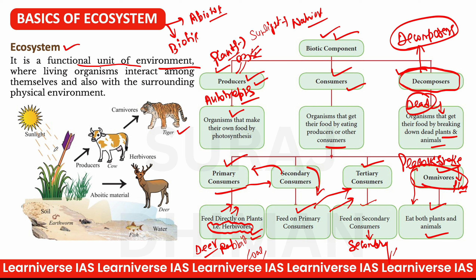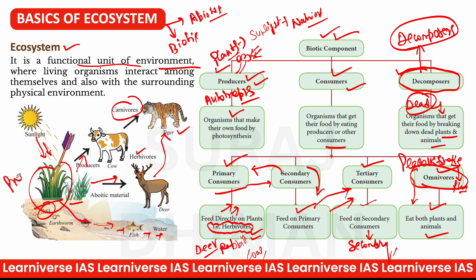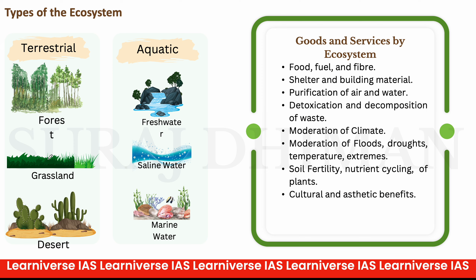उदाहरण के तौर पर — soil में plants लगे, plants को deer या cow ने खाया, sunlight से photosynthesis हुई, fish ने nutrients consume किए। Deer को tiger ने consume किया — तो deer हुआ herbivore और tiger हुआ carnivore। और grass is the producer। यह है food chain का basic example।